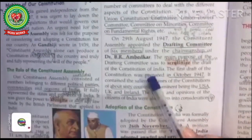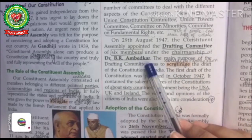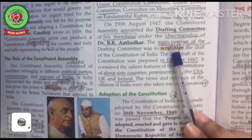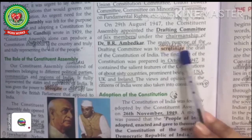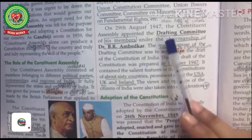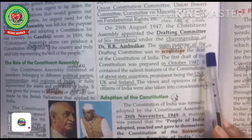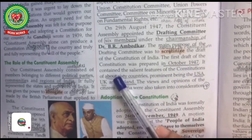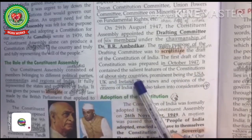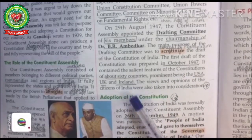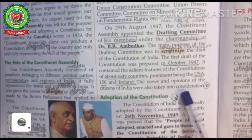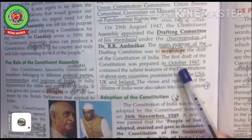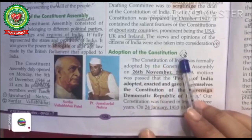The Drafting Committee had six members under the chairmanship of Dr. B.R. Ambedkar. The main purpose of the Drafting Committee was to scrutinize — meaning carefully examine — the drafts of the Constitution of India. The first draft of the Constitution was prepared in October 1947. It contained the salient features of the constitutions of about 60 countries, prominent among them being the USA, UK, and Ireland. The views and opinions of the citizens of India were also taken into consideration.